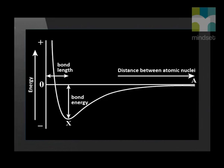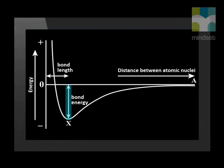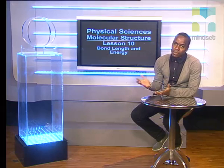Why is a short bond stronger than a longer bond? Shorter bonds tend to be more stable than longer bonds — in other words, shorter bonds tend to have less potential energy than longer bonds. So more energy must be added to the molecule to break a shorter bond than a longer bond, making a short bond stronger than a longer bond.